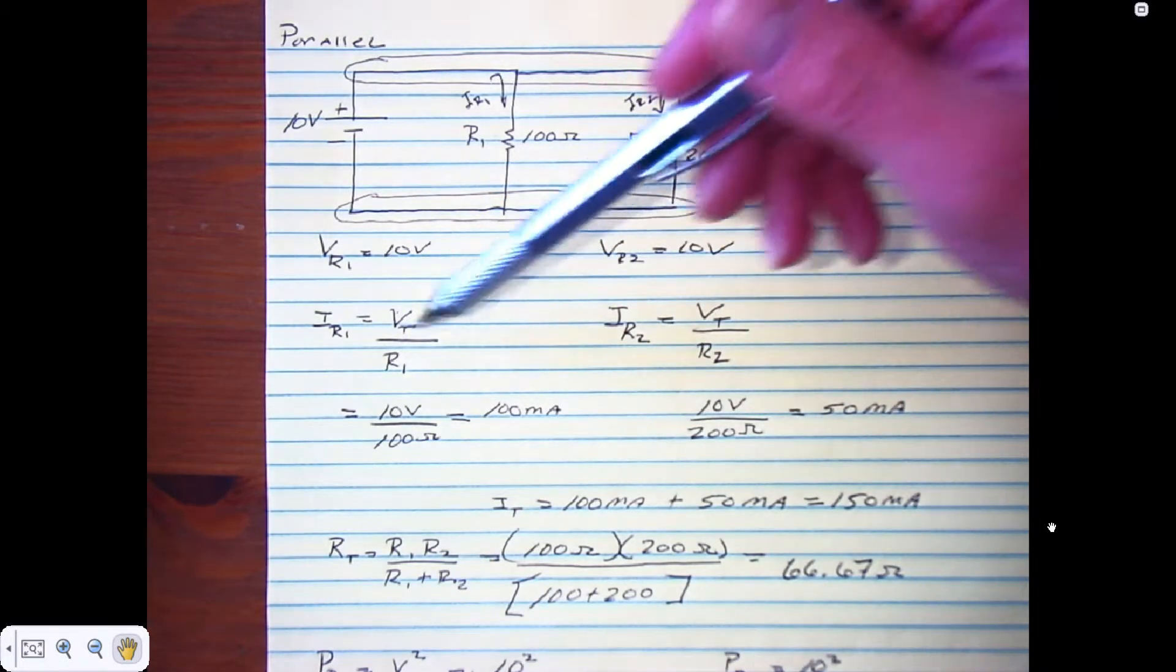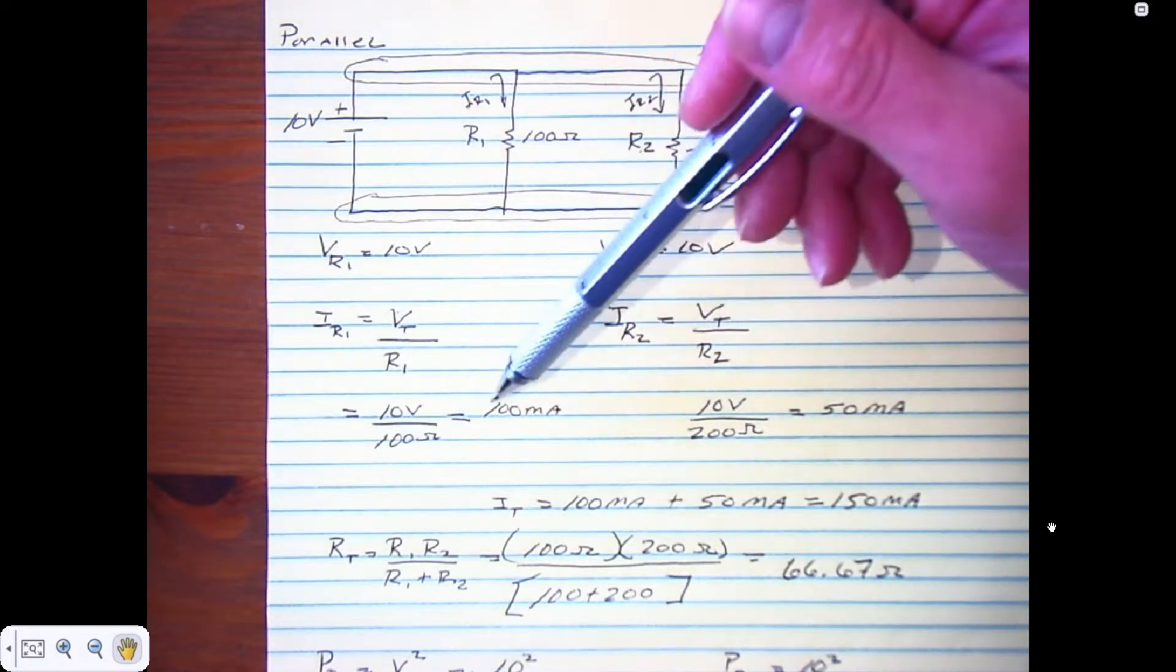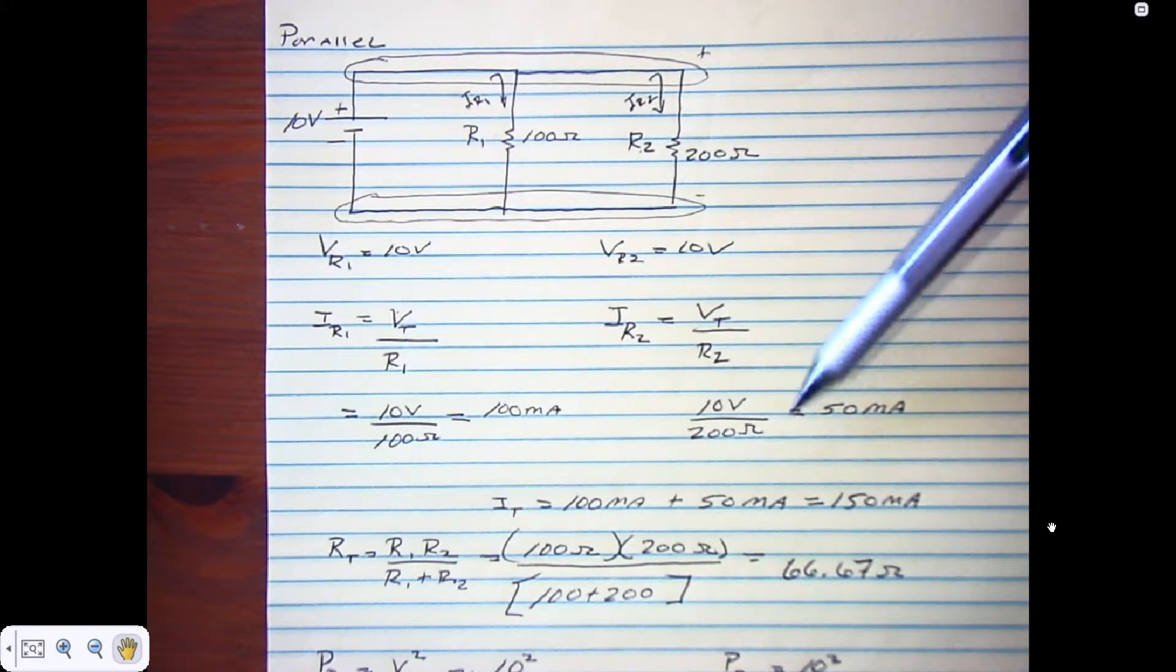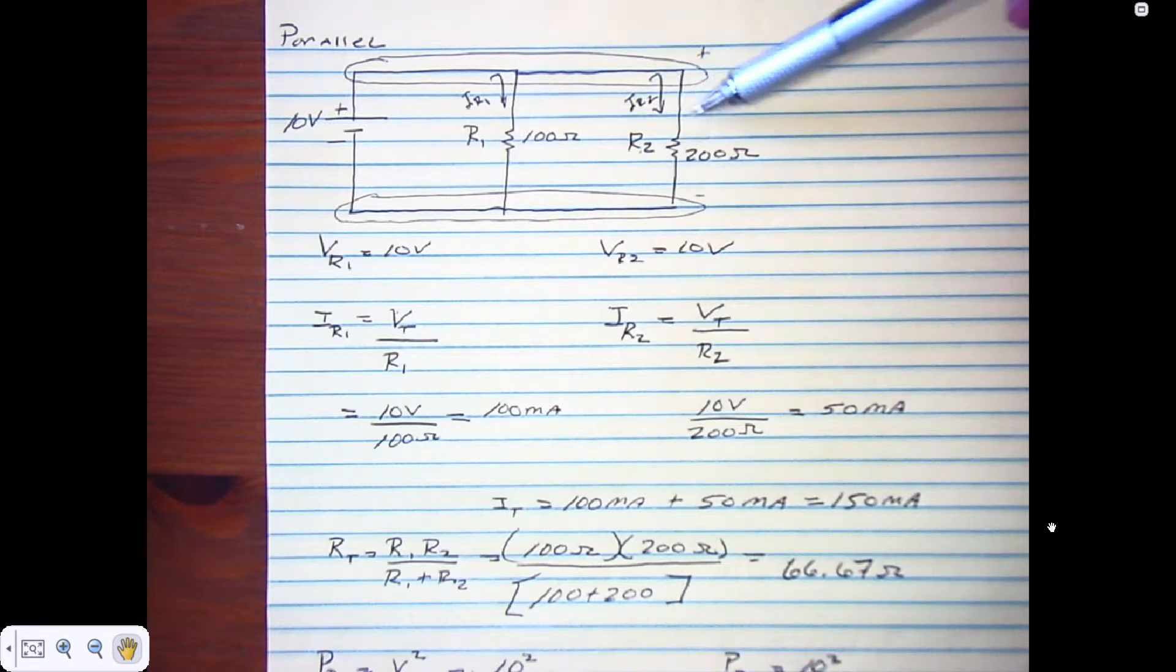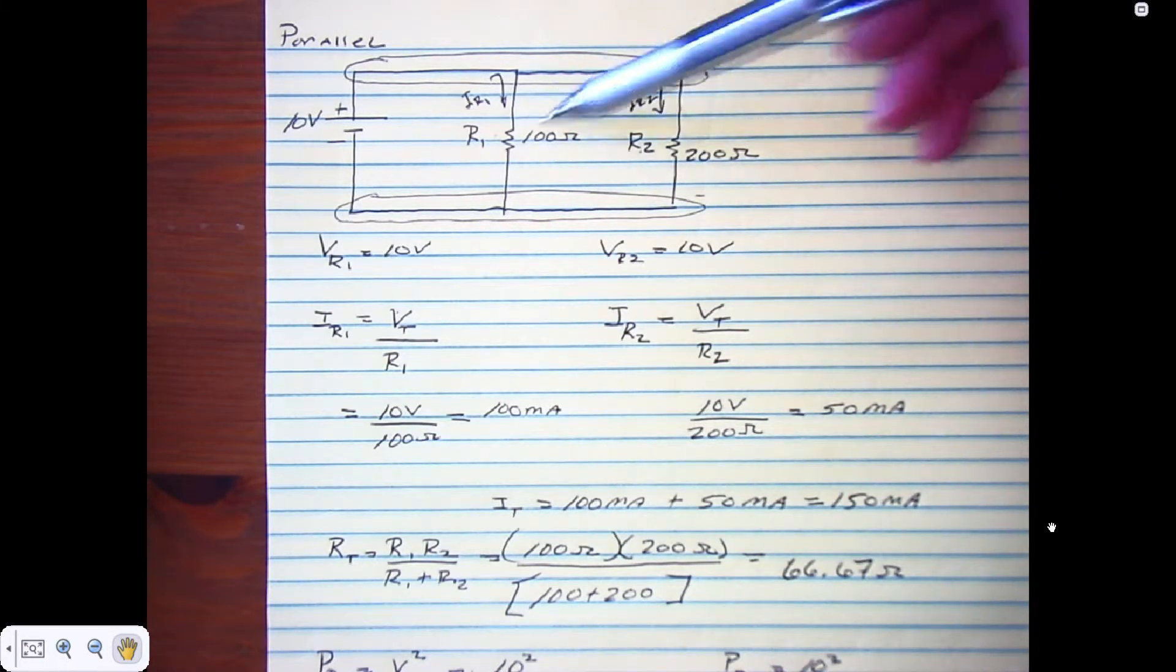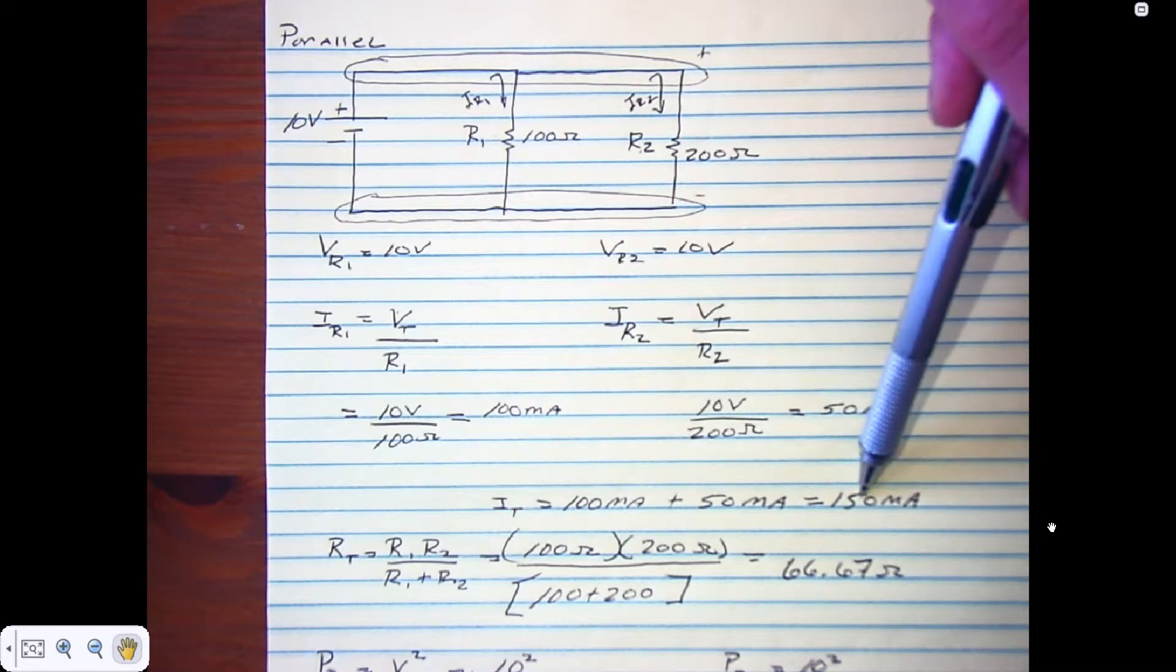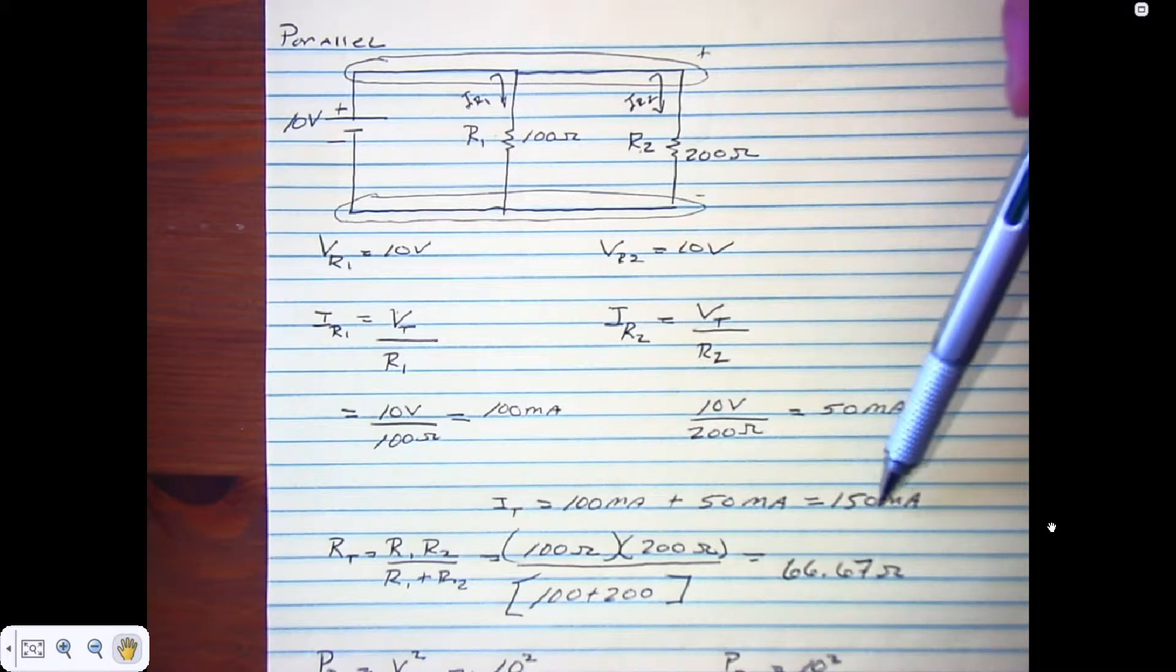We take the ratio between those two and we have 10 volts over 100 ohms equals 100 milliamps. Likewise, IR2 is similar, so this means we have 100 milliamps coming through here and 50 milliamps coming through this branch. The sum of these two branches should equal 150 milliamps, which it does - 100 plus 50 equals 150.